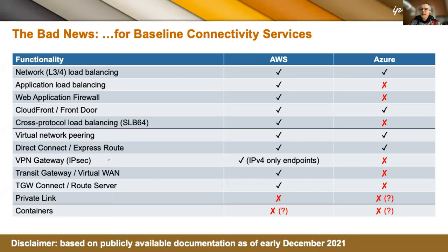Moving to load balancing, there are many more X's on the Azure side. Network load balancing is really scale-out NAT — it's called load balancing but it's just fancy NAT — and neither provider wants to do NAT between protocols, so both AWS and Azure can do 4-to-4 or 6-to-6. Application load balancing is like HAProxy or NGINX in AWS, and probably a Windows Server in Azure. Both put a network load balancer in front of a farm of application load balancers to scale out. AWS can do application load balancing on v6; Azure cannot — their public documentation admits it.